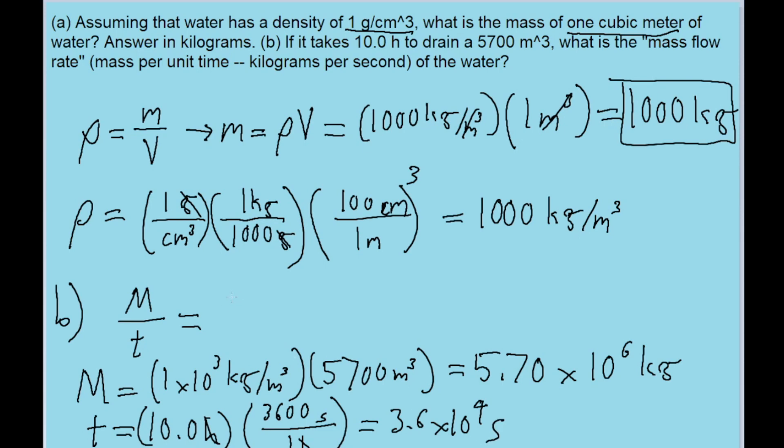Now all our units are consistent and will get us the answer we want. So let's put this into our equation. 5.70 times 10 to the power of 6 kilograms divided by 3.6 times 10 to the power of 4. And if we put all this into our calculator, we find a mass flow rate of about 158 kilograms per second. So that is the mass flow rate that we're asked to find in Part B.